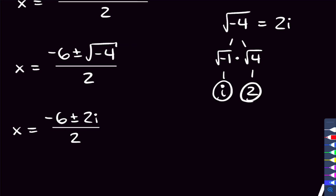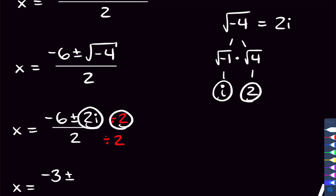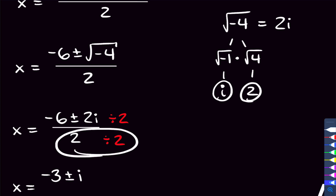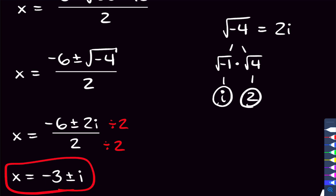There's one more thing we can do to simplify: every single term is a multiple of 2, so we can divide top and bottom by 2. Doing that, we get negative 6 divided by 2 is negative 3, and 2i divided by 2 is just i, and 2 divided by 2 is 1. So the answer is negative 3 plus or minus i. This was a problem where we were completely able to get rid of that square root and it turned out pretty nice. But what about a problem where we're not able to completely get rid of the square root? That's what we're doing next.